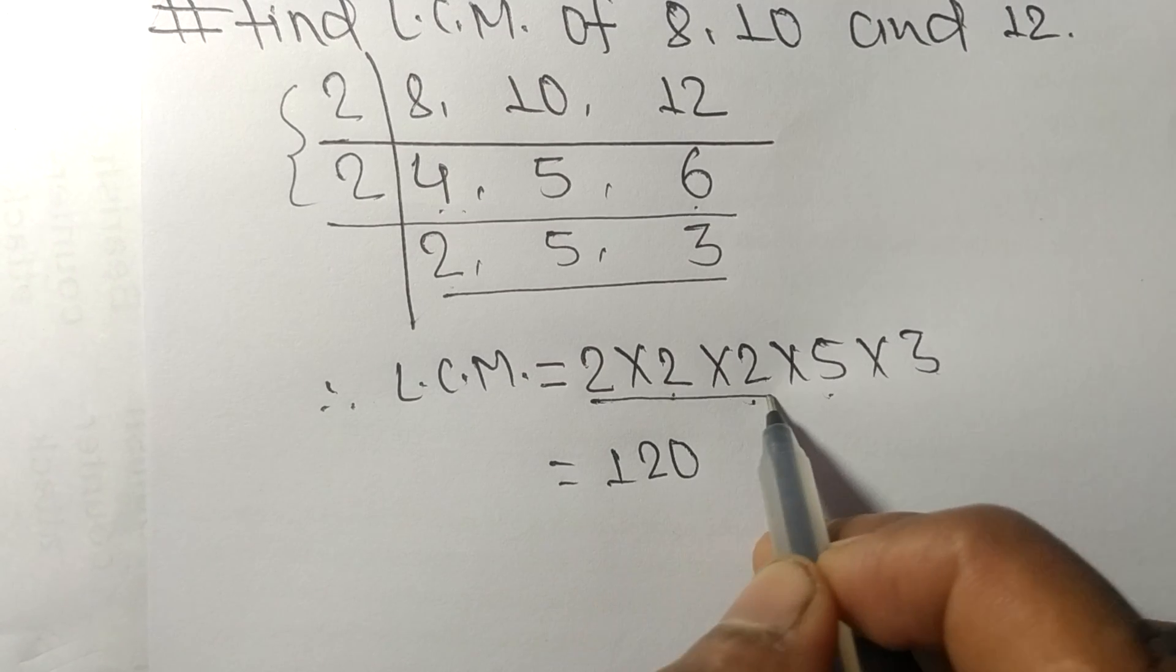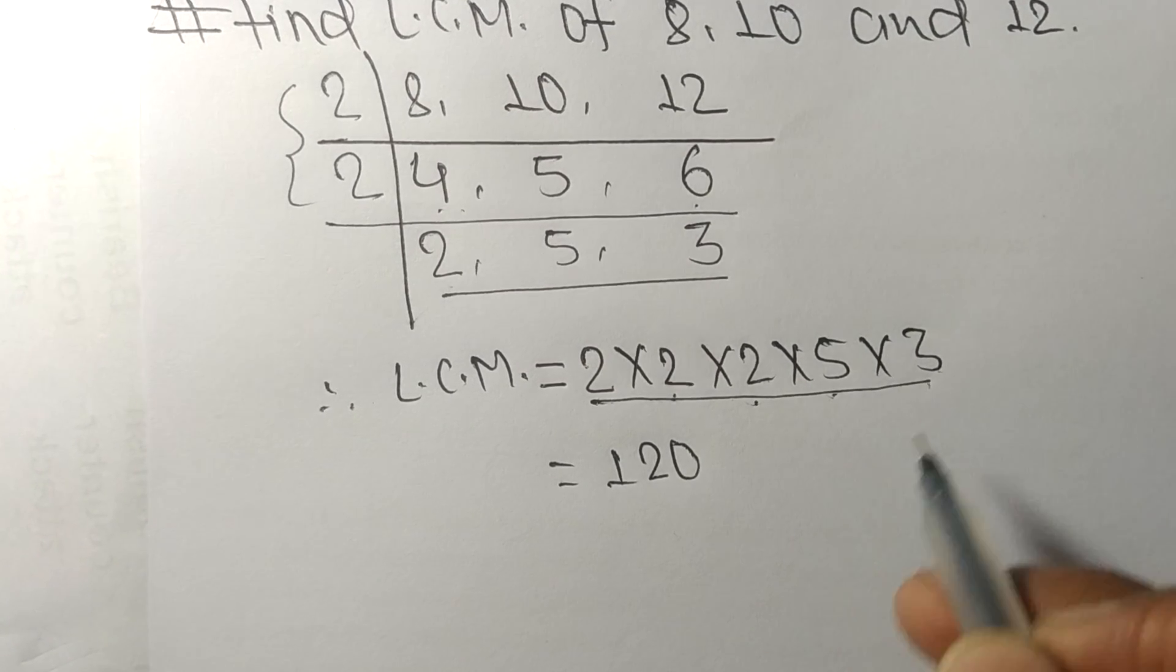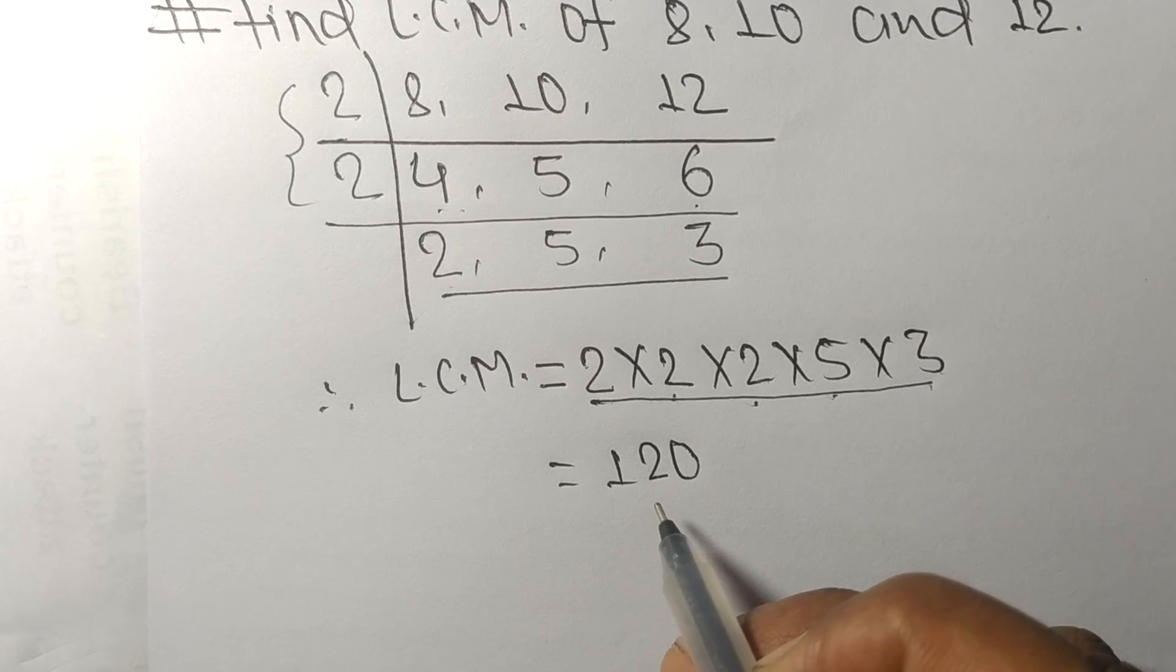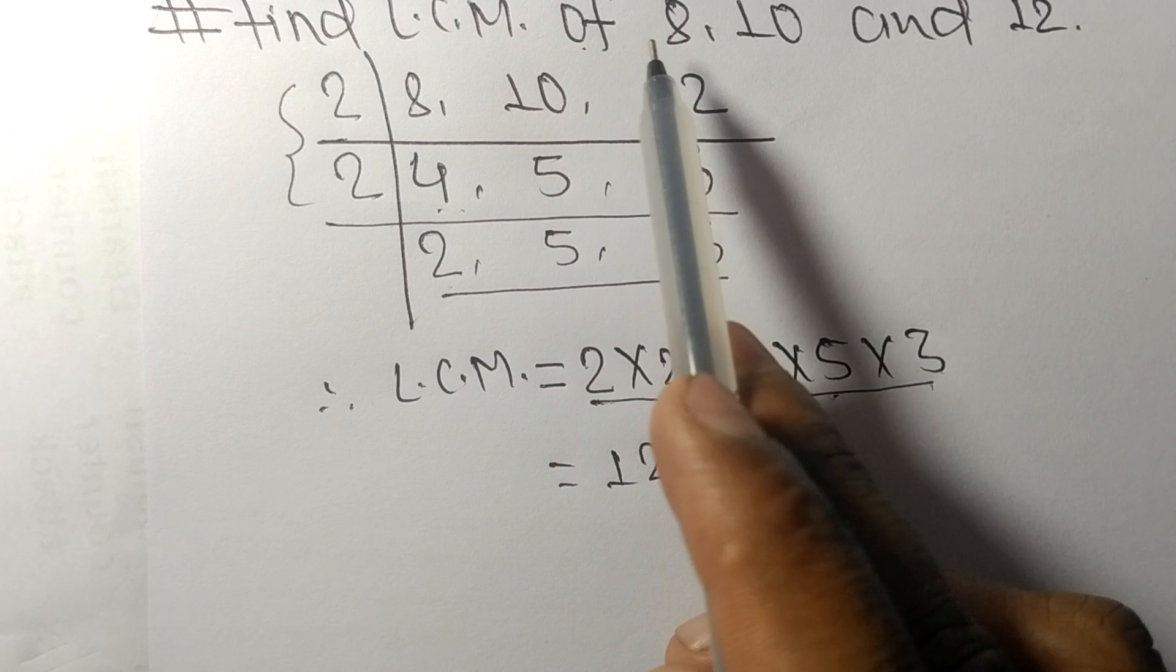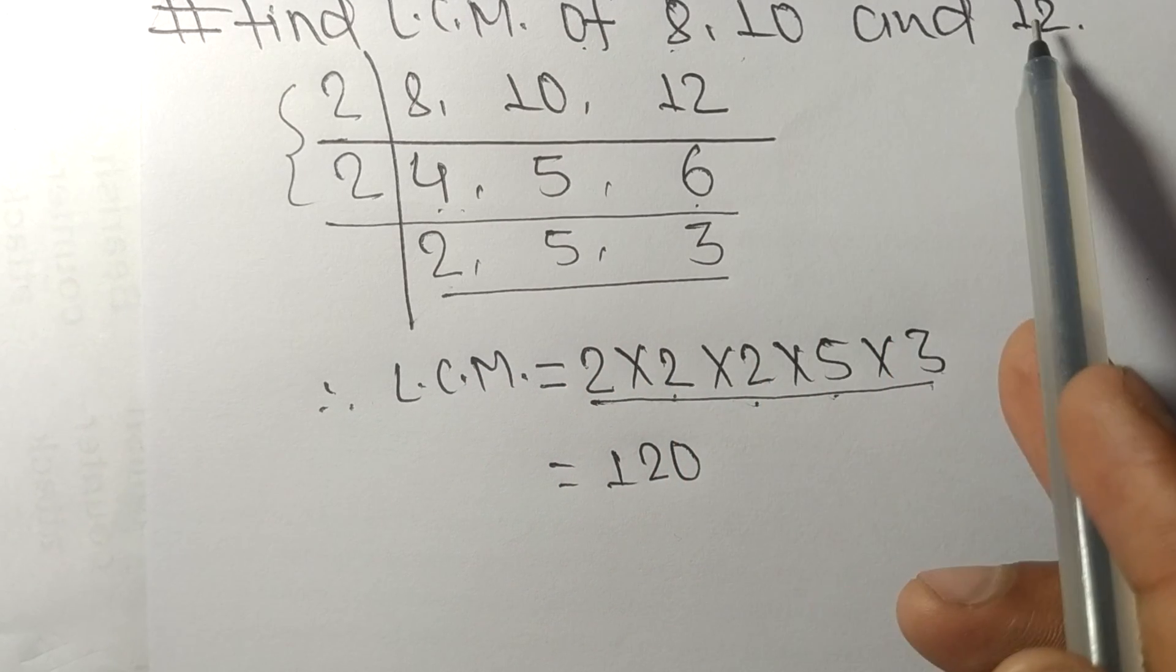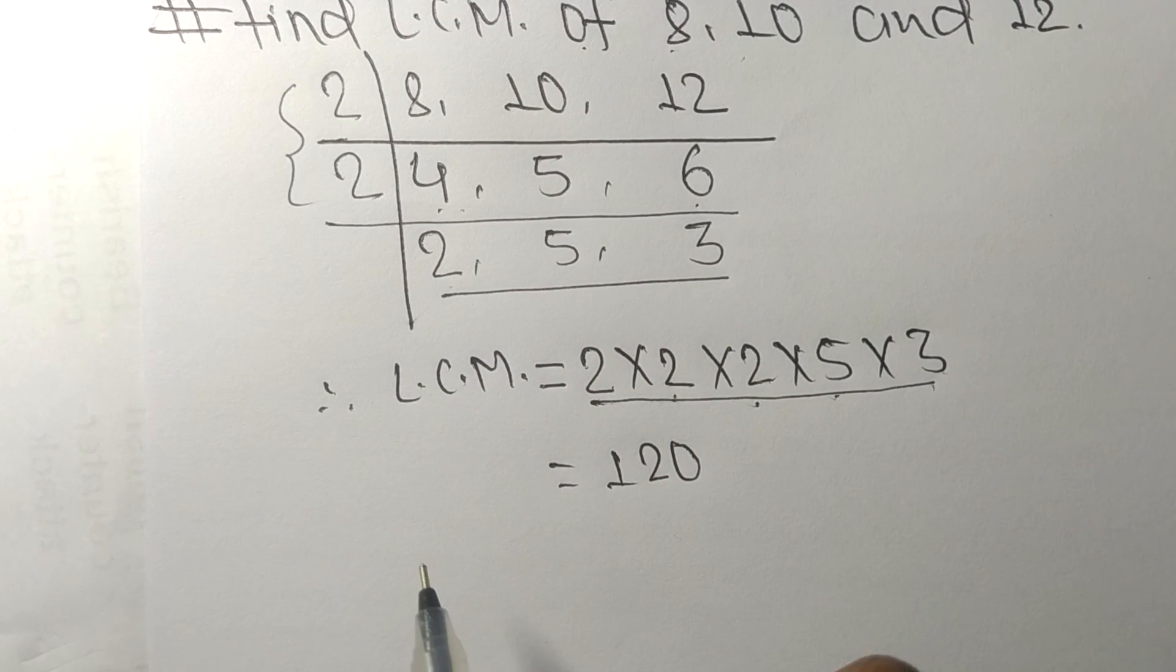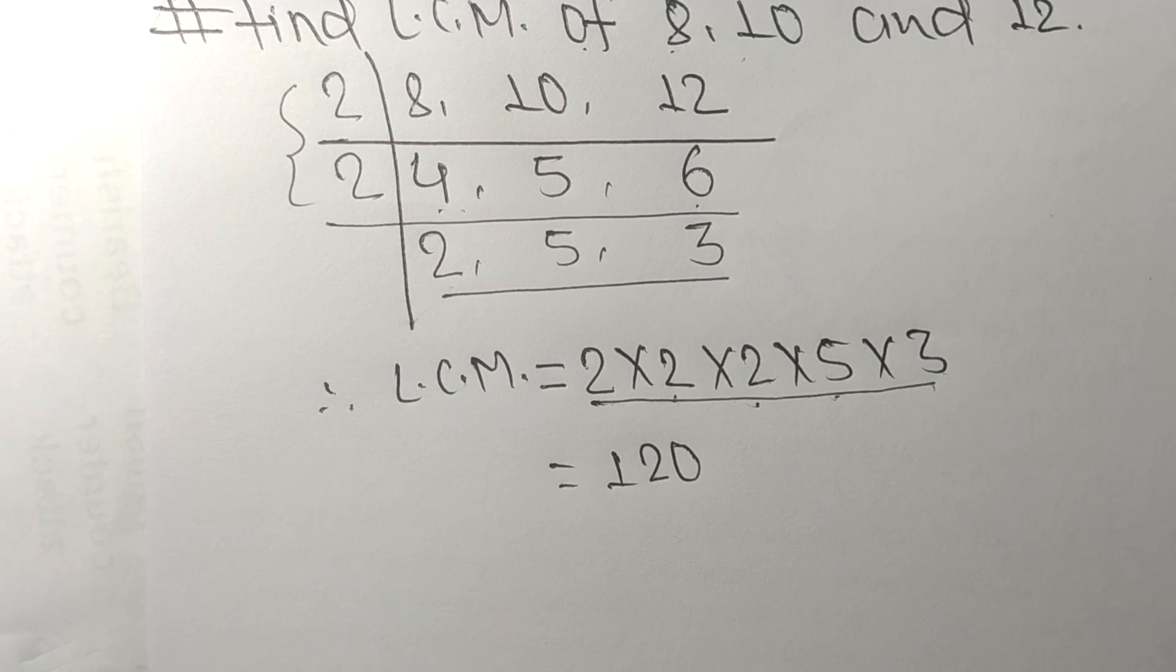So by multiplying all these numbers, we got 120. So 120 is the LCM of 8, 10 and 12. So this much for today and thanks for watching.